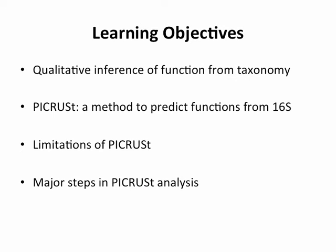So learning objectives: I'm going to talk a little about how we do qualitative inference all the time — function from taxonomy. Then I'm going to talk about PICRUSt, which is a method to predict function from 16S data. Then I'm going to talk about some limitations of PICRUSt and the major steps of doing a PICRUSt analysis, which will lead into the tutorial.